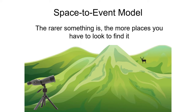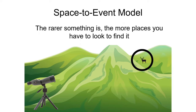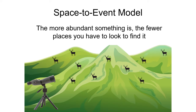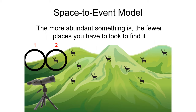For example, let's say you're glassing a hillside for mule deer with your spotting scope. If there aren't very many deer on the hillside, you'd expect to have to glass a lot of the hillside before you find a deer. In this example it took six spotting scope view sheds to find a deer. If we knew how many square feet you were viewing with each spotting scope view shed, we could produce an estimate of mule deer density — the number of deer per square foot on this hillside. Conversely, if there were lots of deer on the hillside, you'd expect to find one without viewing much of the hillside. In this example it only took two view sheds of the spotting scope to find a deer.